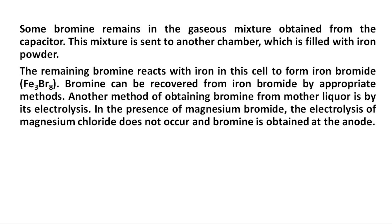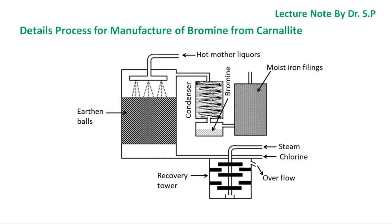Another method of obtaining bromine from mother liquor is by its electrolysis. In the presence of magnesium bromide, the electrolysis of magnesium chloride does not occur and bromine is obtained at the anode.